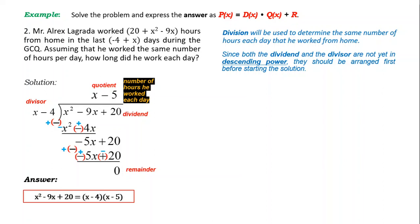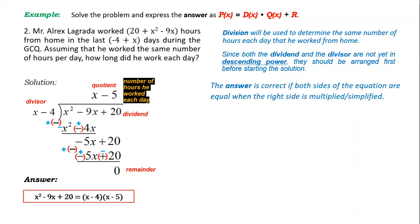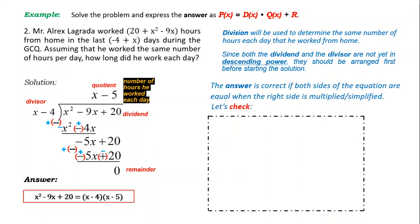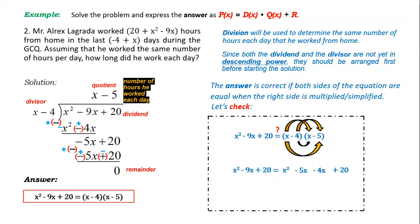Writing the answer per the instruction: P(x) = (x − 4)(x − 5) + 0. Let's check: multiply the right side. x times x = x²; x times −5 = −5x; −4 times x = −4x; −4 times −5 = +20. Combining similar terms: −5x + (−4x) = −9x; bring down +20. Right side equals x² − 9x + 20 — equal to the left side. The answer is correct.